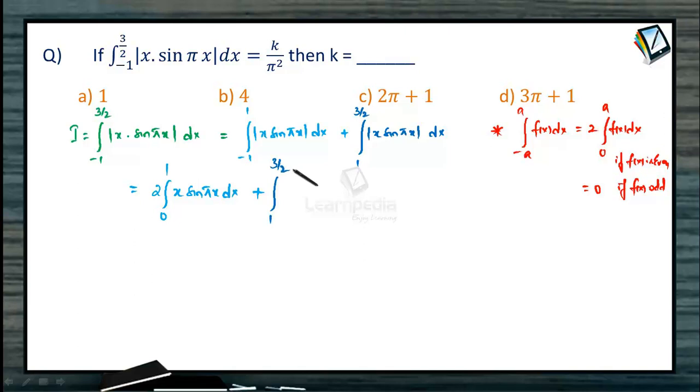Now what can you say about the function between 1 to 3 by 2? Between 1 to 3 by 2 this is x times sin pi x which lies between sin 1 pi to sin 3 pi by 2 which is in the third quadrant. Therefore sin is negative. So this is minus of x sin pi x dx.